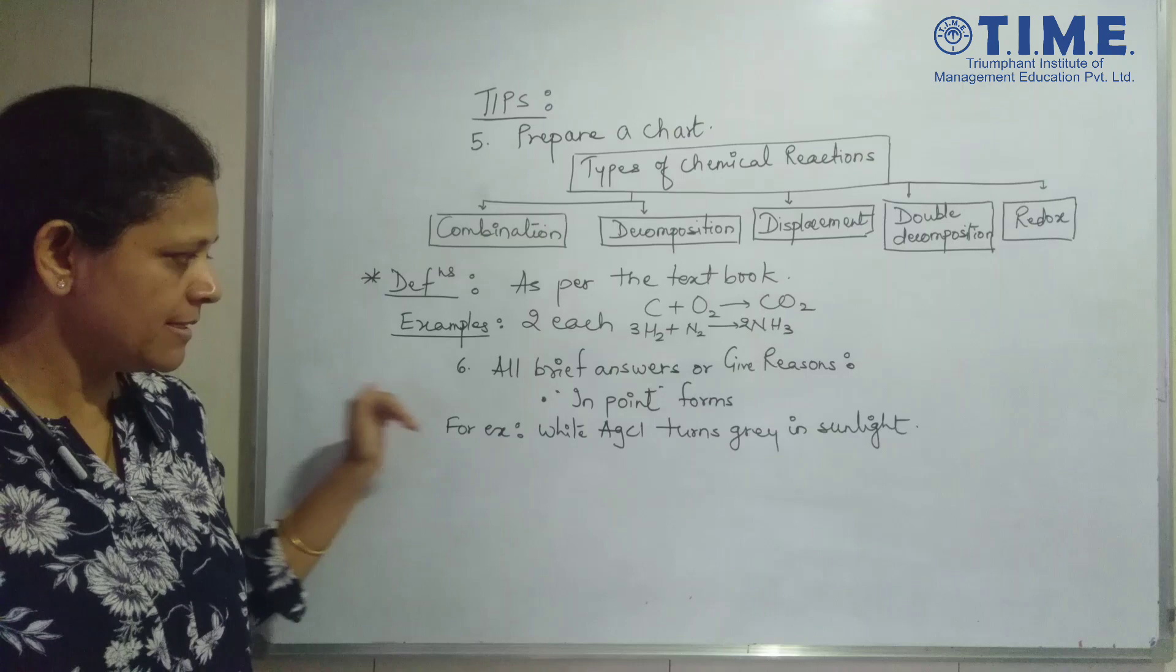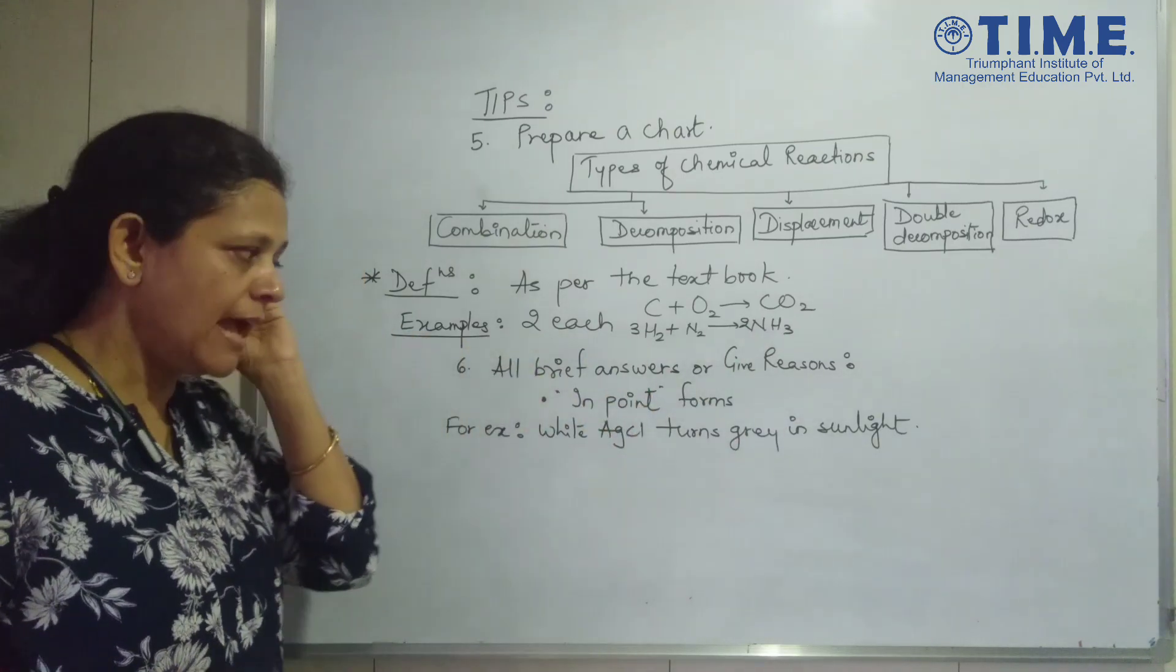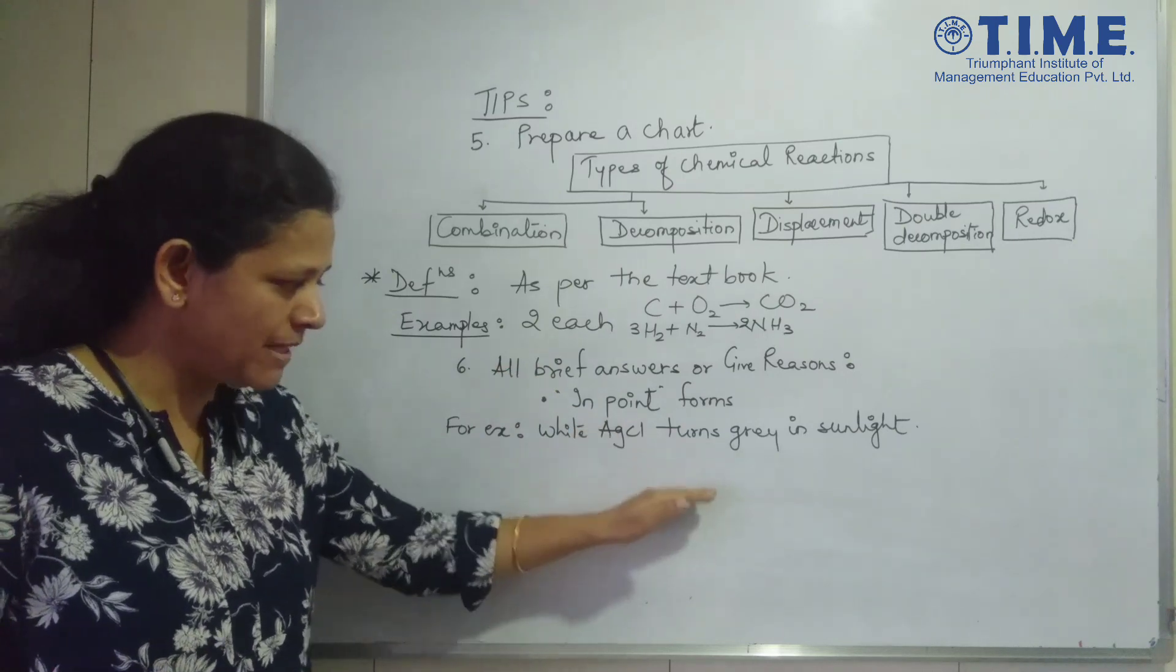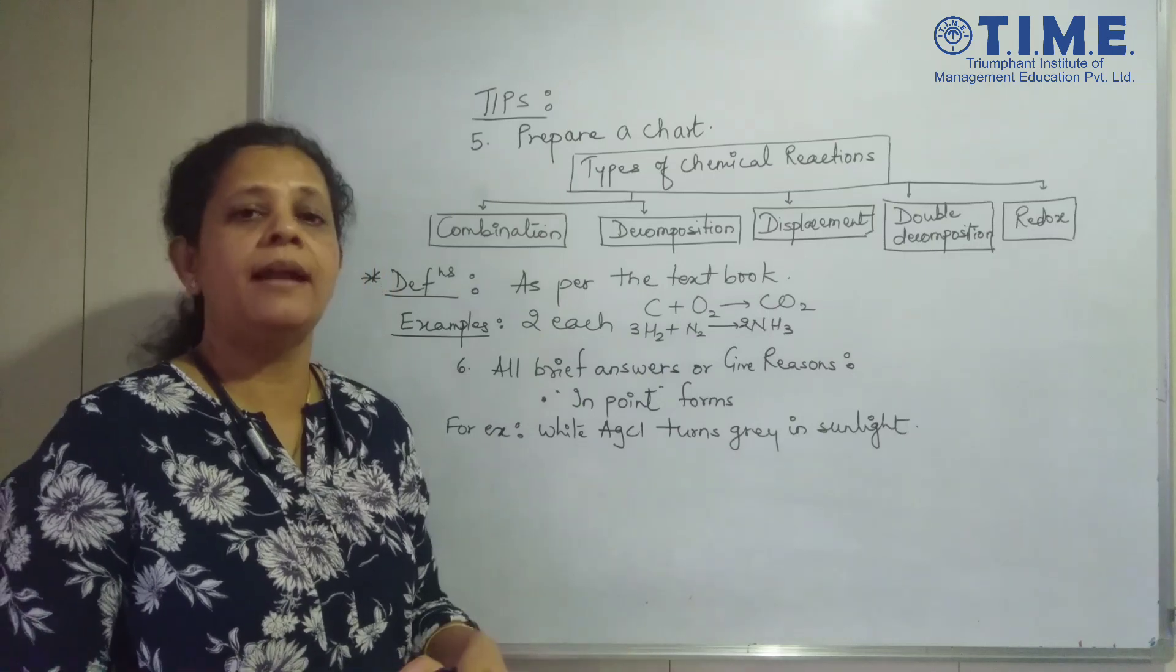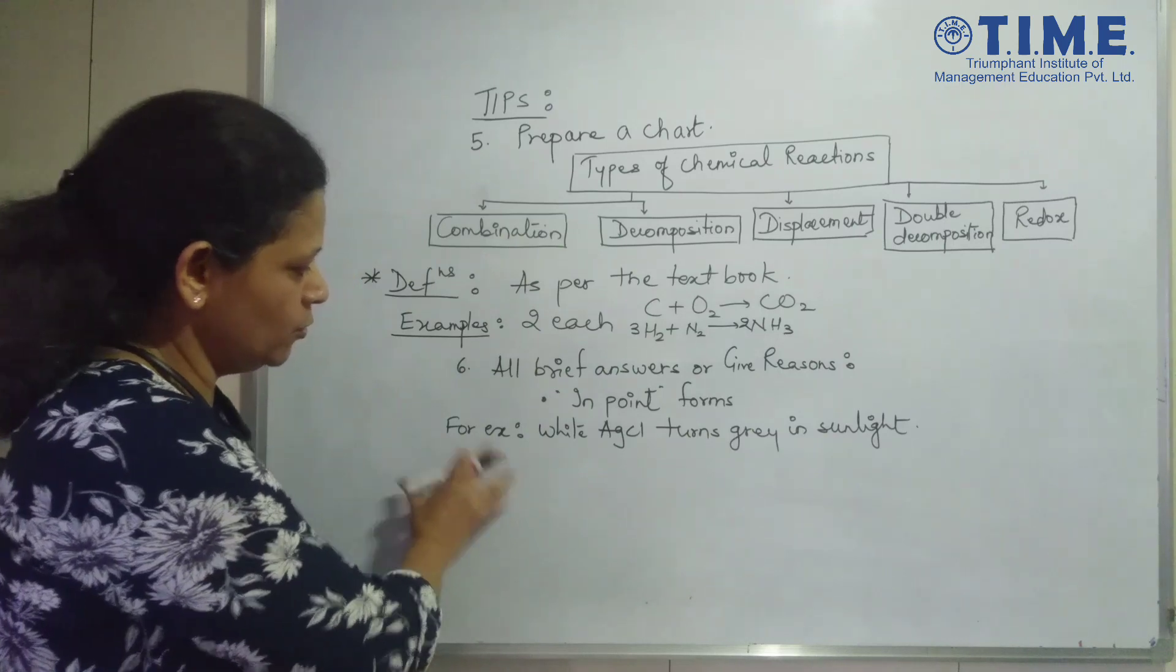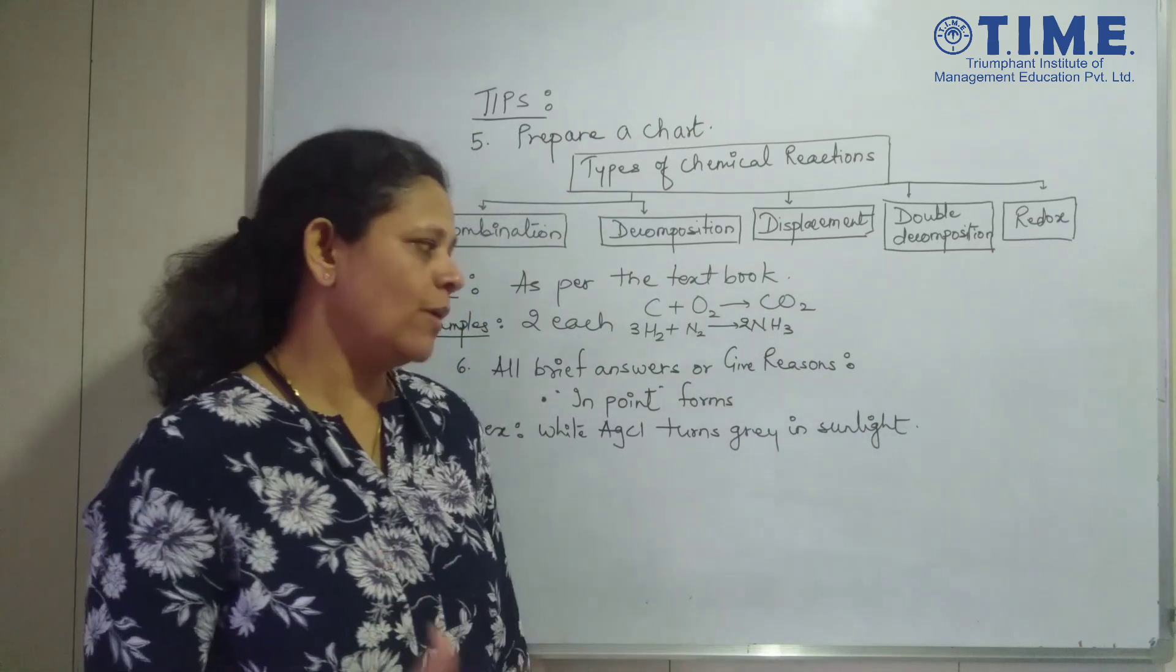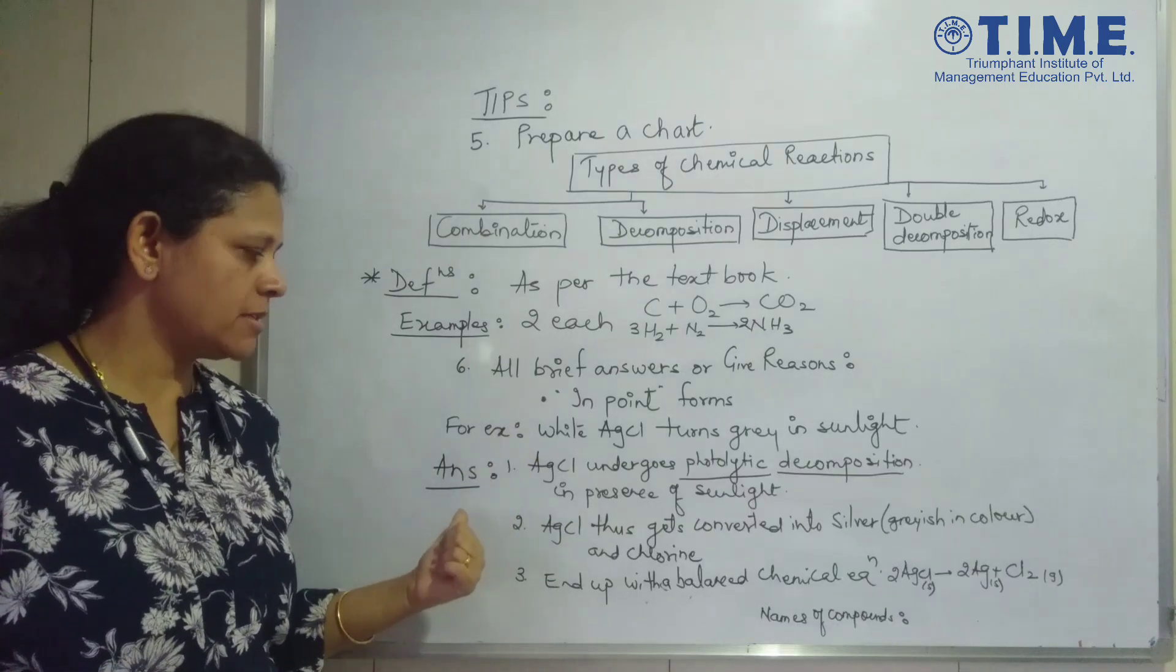So try and learn two examples each of these five types of reactions. The next point is very important. All brief answers, all give reasons, they have to be answered in point format. You cannot write like an essay. It has to be as per the points. The keywords have to be mentioned and underlined when you are writing the answer. For example, I have taken one give reason. White silver chloride turns grey in sunlight. This is your question.